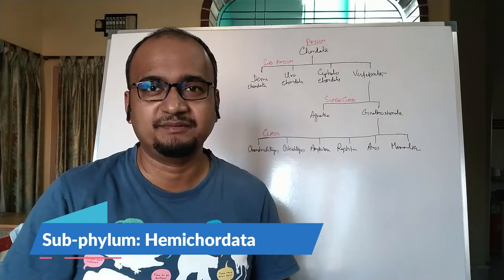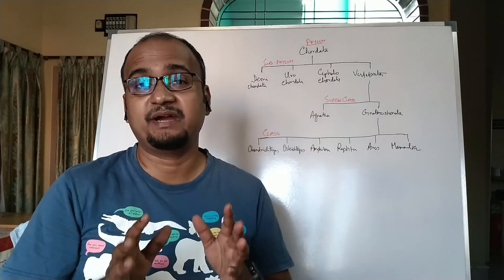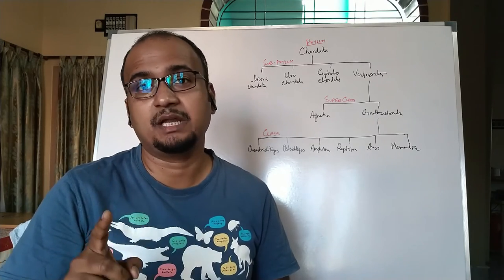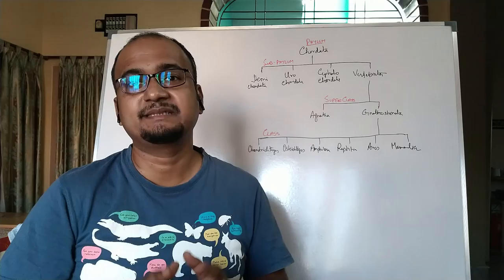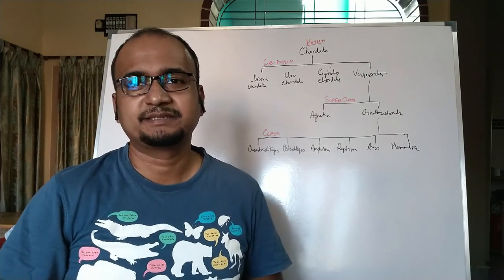First sub phylum, Hemichordata. Their body is soft and unsegmented, typically divided into three distinct regions: head, collar, and trunk. The animals are ciliary filter feeders. Nervous system is primitive type and mainly consists of sub-epidermal nerve plexus.